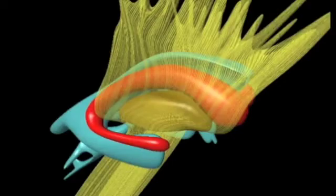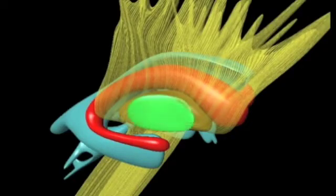The globus pallidus is located lateral to the internal capsule. It can be divided into an internal and external part.